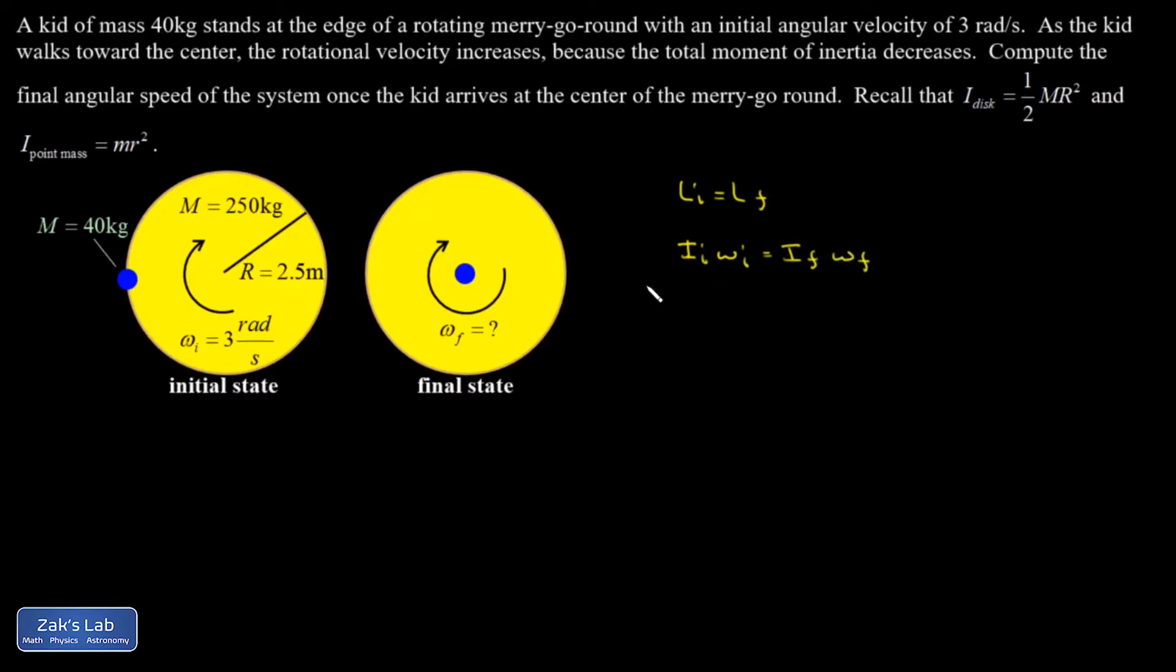And my initial moment of inertia has two different components to it. There's the heavy disc, so the merry-go-round itself. So I'm going to subscript that with a D. And then there's the kid. And a point mass has a moment of inertia just given by MR squared. So I have the mass of the kid standing right on the edge of the disc. That means we have the same radius there.